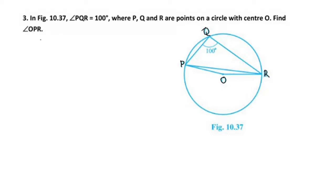In the figure, angle PQR is equal to 100 degrees, where P, Q, and R are points on the circle with center O.